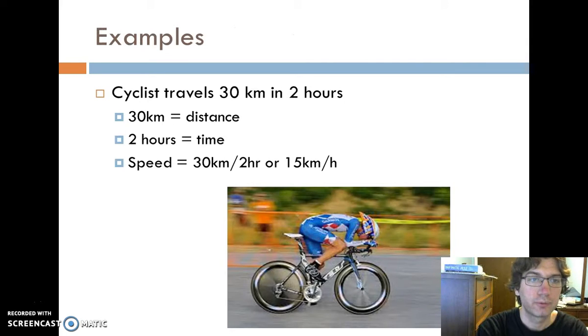This is an example right here. We have a cyclist that is traveling 30 kilometers in two hours. So our distance that we are covering is 30 kilometers. Our time is two hours. I'm getting that directly from our information provided. I know that speed is distance divided by time. So my distance of 30 kilometers and my time of two hours, I'm going to divide them, and I am going to get a speed of 15 kilometers per hour.